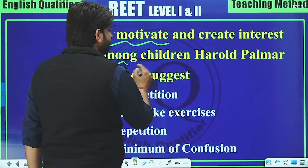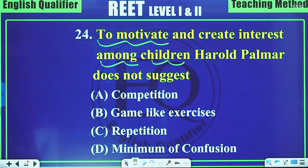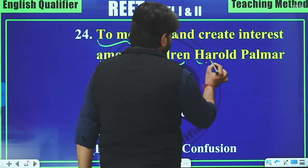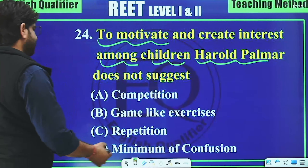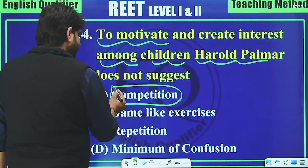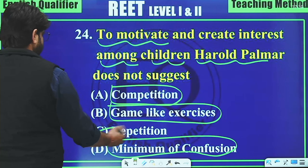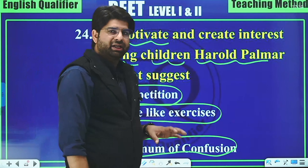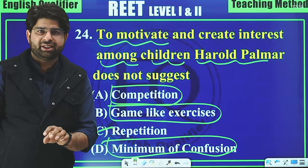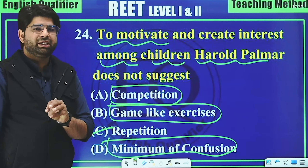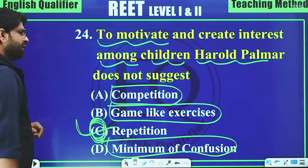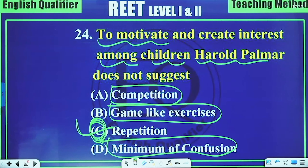Question 24: To motivate and create interest among children, Harold Palmer does NOT suggest which of the following — competition, game-like exercises, repetition, or minimum of confusion? Palmer suggested competition, game-like exercises, and minimum of confusion, but repetition is NOT a method he suggested for motivation. So repetition is the correct answer.